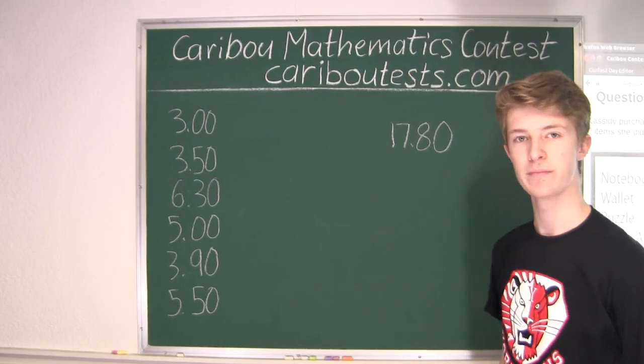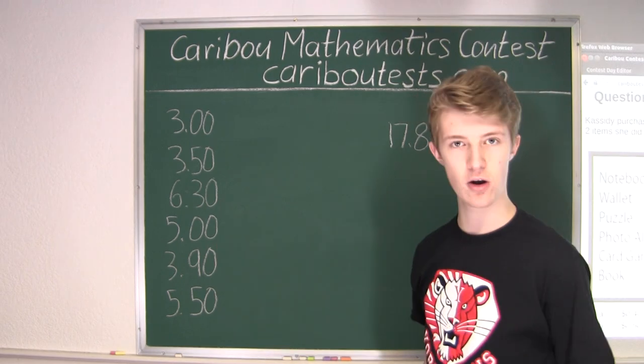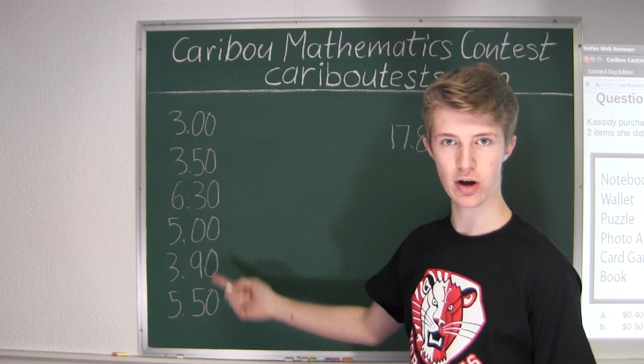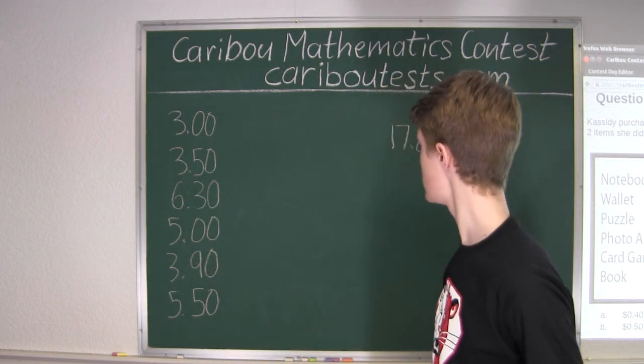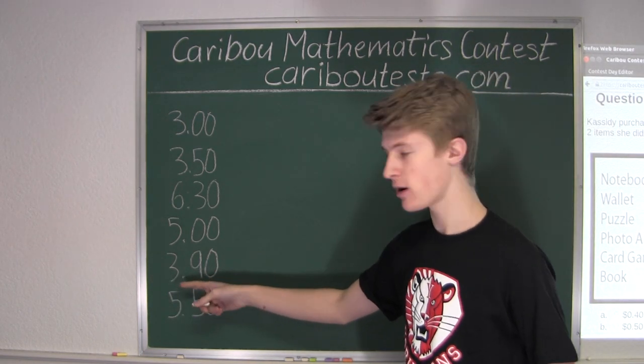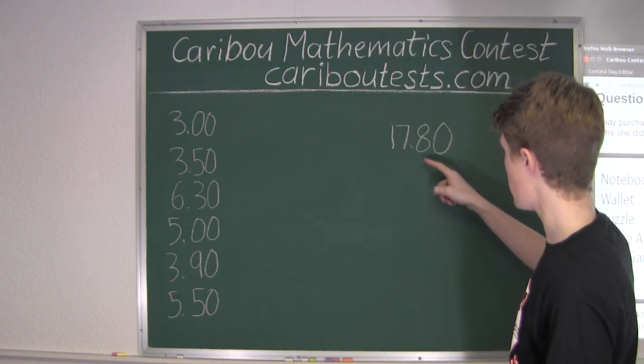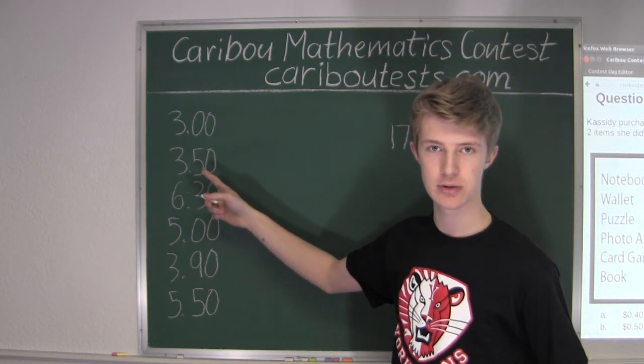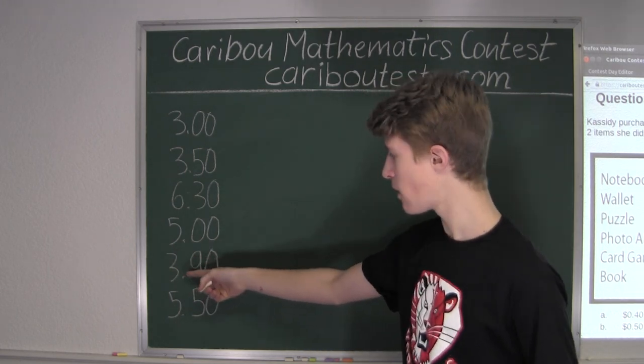Now, we can see that the total ends in $0.80, and almost all the items end in half a dollar or just a full dollar, except for the $6.30 and the $3.90. Now, if we were to have the item which is the $3.90, then subtracting that from $0.80, we would still end up with $0.90. And even $0.30 and $0.50 only add up to $0.80. So, therefore, she could not have purchased the item for $3.90.